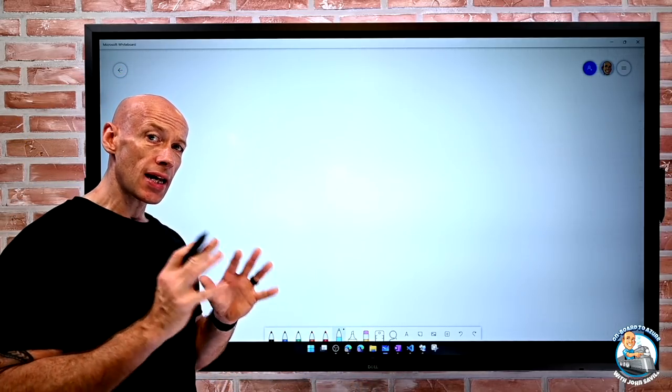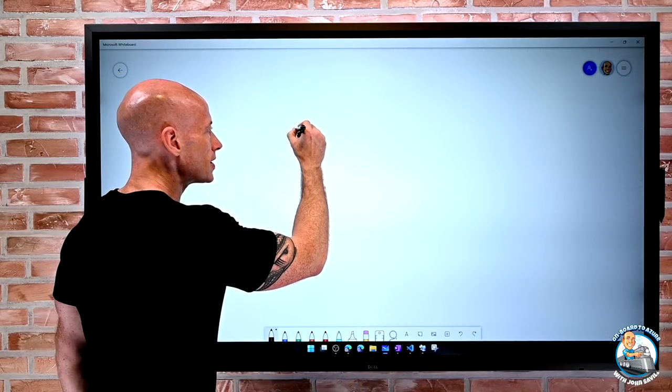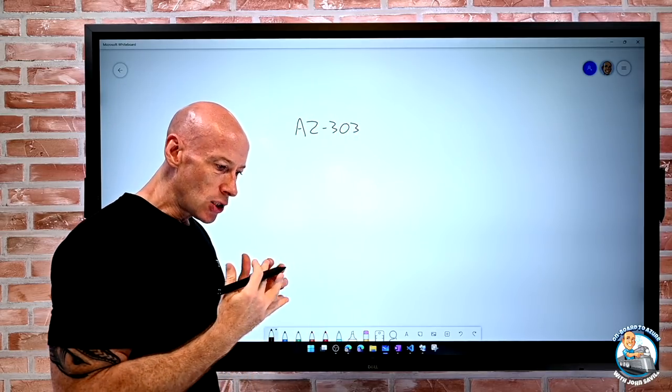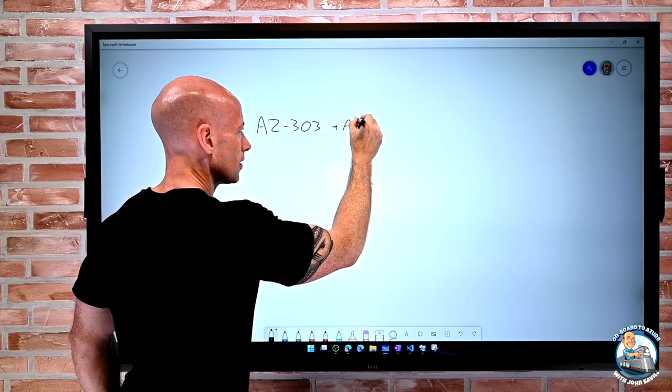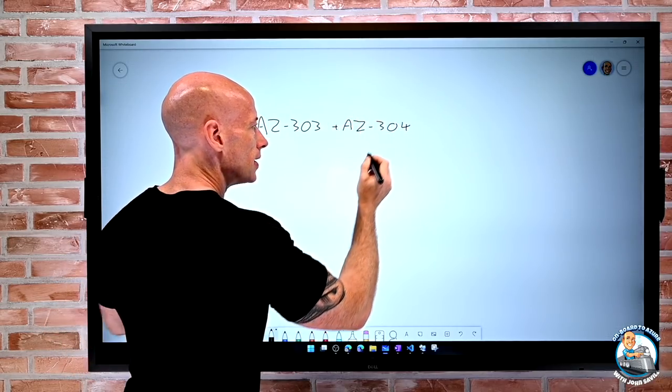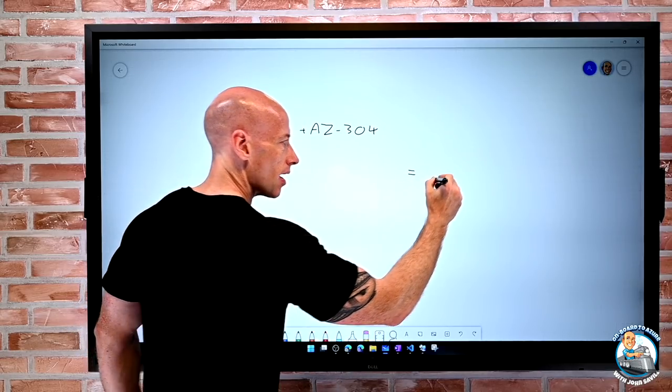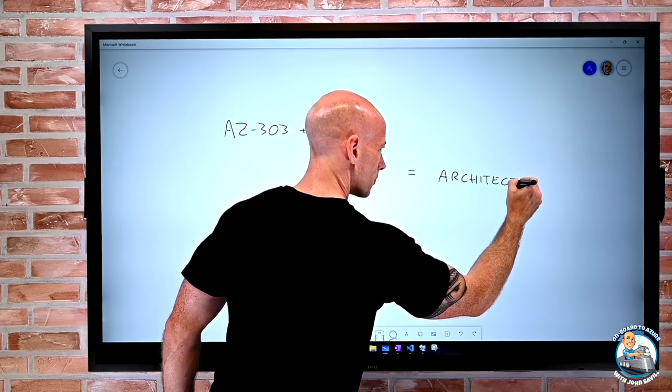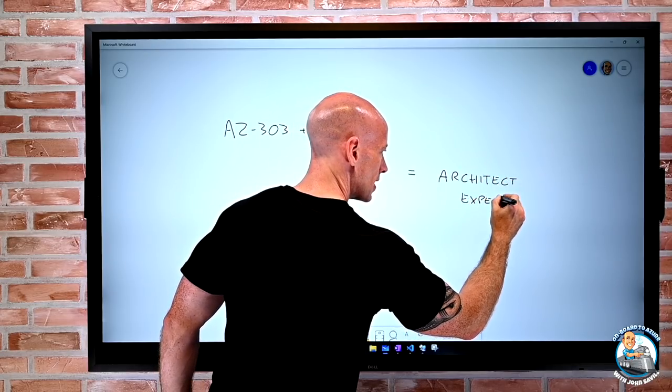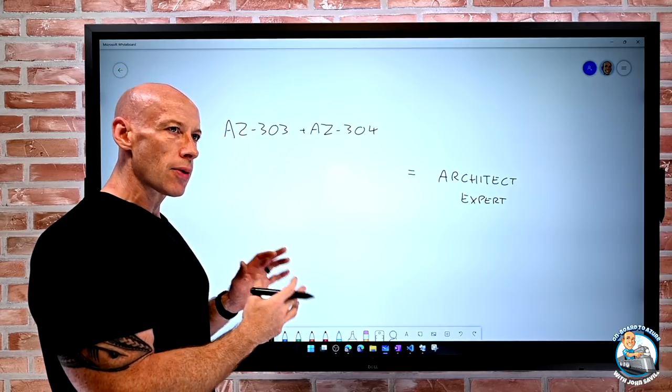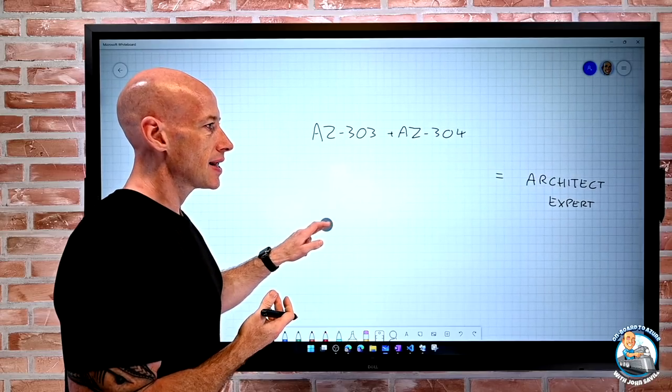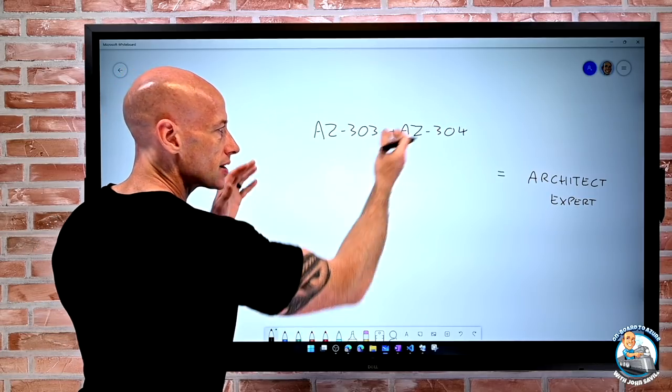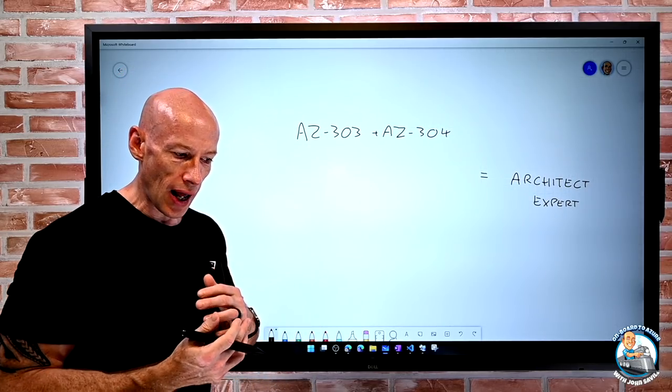Historically to get the certification we would take two exams. We would take the AZ-303 and we would take the AZ-304, and what these get us is that Architect Expert certification. Now for many people along the way they would get other certifications. For example, you might take the Azure Administrator certification, the AZ-104, and then you would go and take those. There was actually quite a lot of overlap between them.